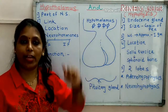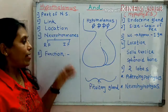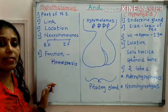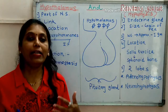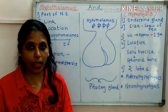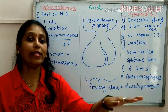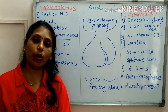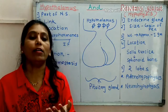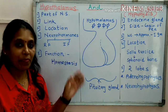Let us study the function of hypothalamus. As hypothalamus is one of the important parts of the nervous system, it plays an important role in homeostasis. Homeostasis is the maintenance of internal environment of our body in spite of changes in the external environment. For example, in winter season the external temperature goes down to 7 or 6 degrees, but our body temperature remains constant at 37 degrees centigrade. The internal environment is controlled by the hypothalamus — this is the first function.